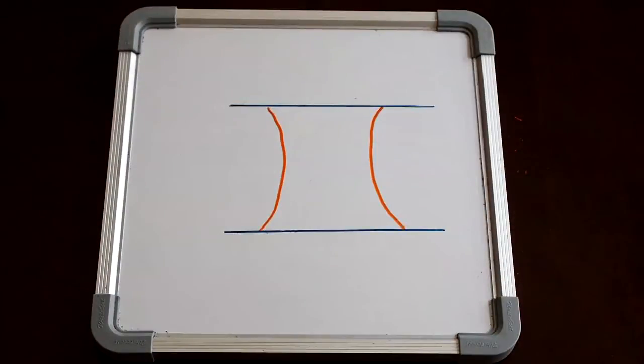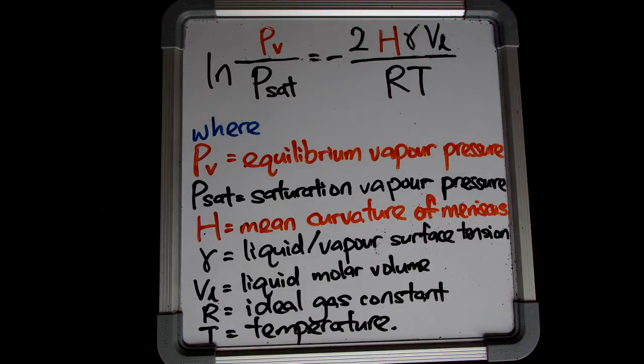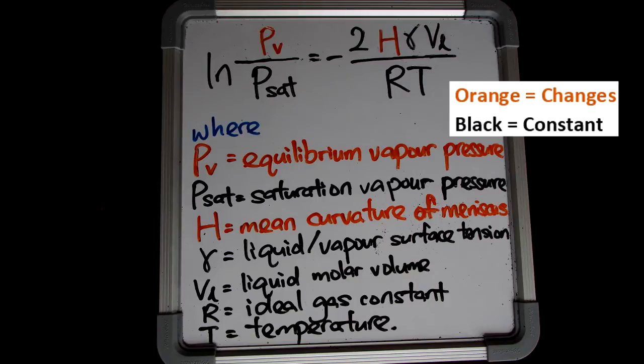This phenomenon can best be described by using the Kelvin equation. The Kelvin equation describes a change in vapor pressure due to a curved interface. This is the Kelvin equation, with all the terms explained below. Please take note that in this context, only the terms in orange have effect towards capillary condensation, whereas the rest are kept constant.